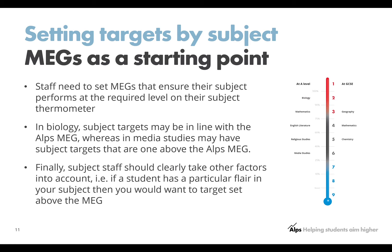But if I'm a media studies teacher and they all get the MEG, that actually puts me at an ALPS grade of a six, which is arguably not as aspirational. So I may want to target set in media studies one up from the MEG, which is potentially more aspirational.